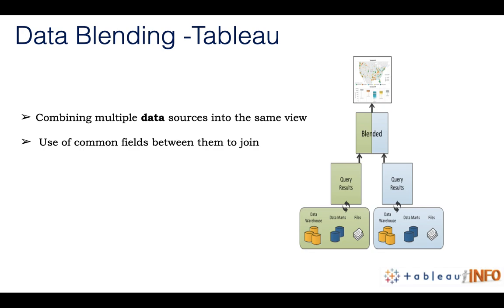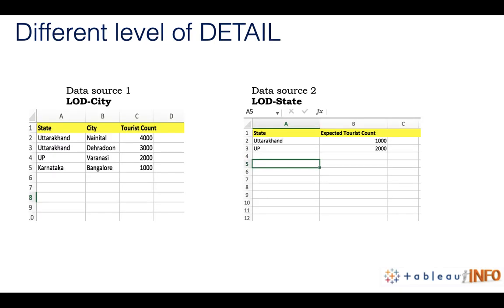What is data blending? Data blending means combining multiple data sources into the same view. As you can see in the diagram, you have different data sources on the right-hand side and the left-hand side — different data warehouses and data marts. You get query results and then blend those query results from the different data sources. We have to make use of common fields — it can be one or more. That is data blending.